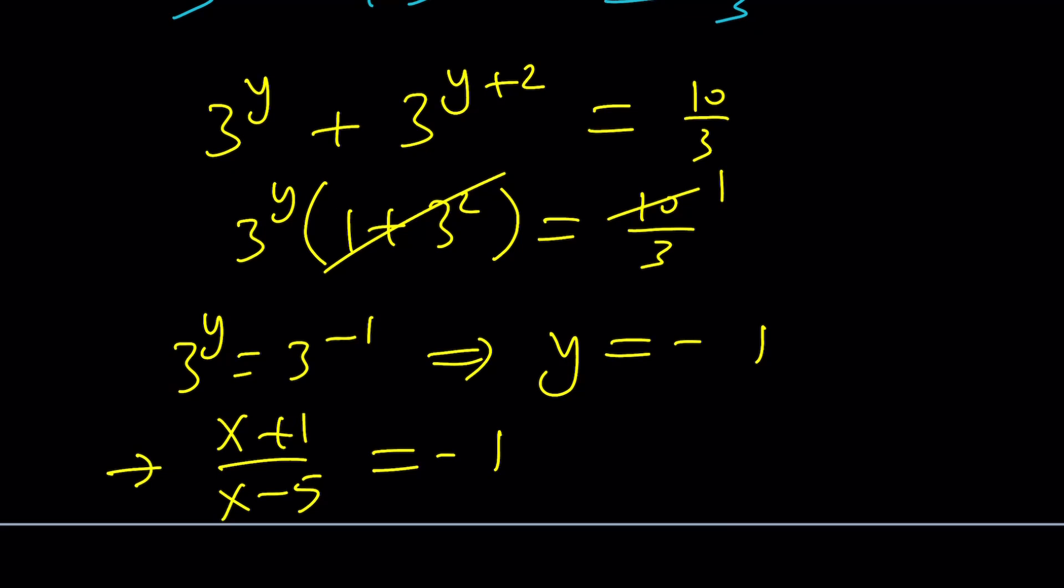This expression cannot be 1, because there will be no solutions. You see? You could have told. Or you could tell. So, anyways, from here, x+1 equals -x+5. 2x equals 4. x equals 2. That should be the only solution.